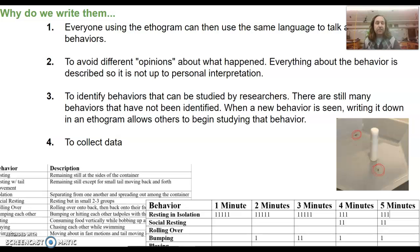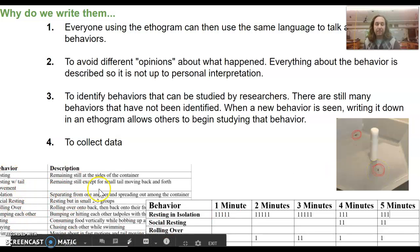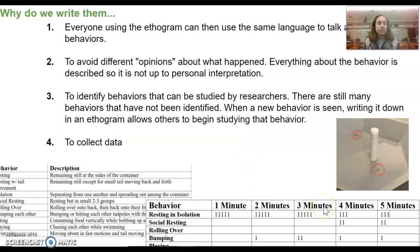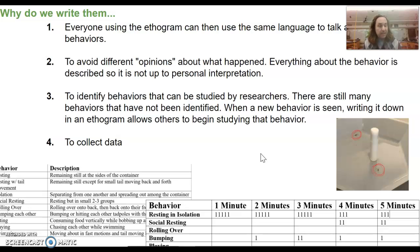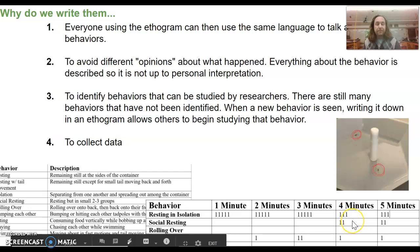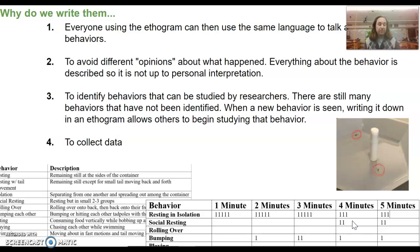Until you spend time observing behaviors, you might not even know there's a behavior worth studying. The fourth reason is that we can collect data. Here's an example of a scientist who used an ethogram: she took images of tadpoles she was studying, wrote an ethogram, and used it to record data — writing down what they were doing every minute for five minutes. In the first minute she saw resting in isolation, in the second she saw resting in isolation and bumping behavior. So we'll both write ethograms and use ethograms in this class.